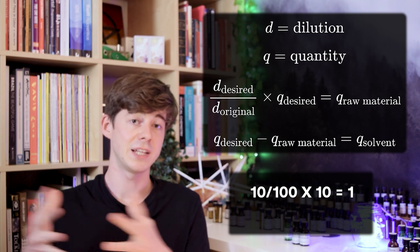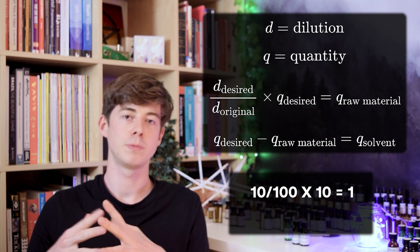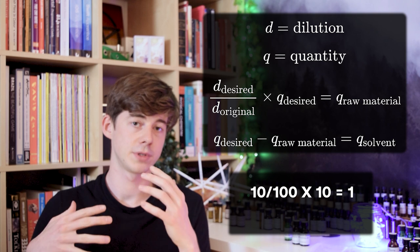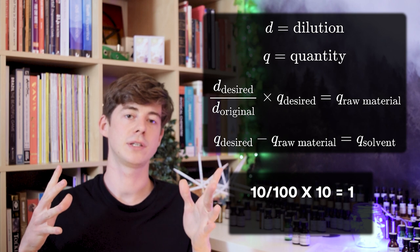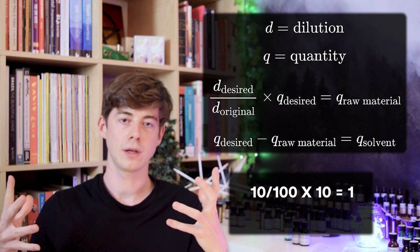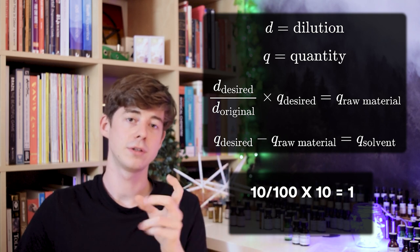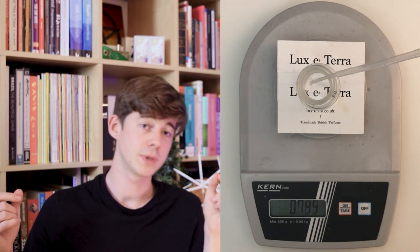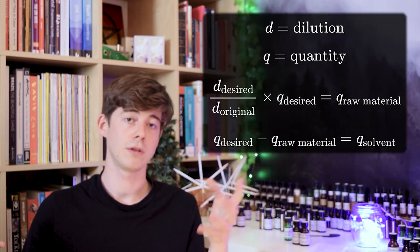Let's say we want to make 10 grams of our new pre-dilution — so we've got a bottle and we want 10 grams total at the end. We take that 0.1 we just calculated and multiply it by 10, which gives us 1, because 0.1 times 10 is 1. That number — 1 gram in our case — is the amount of your raw material that you need to add to the bottle. So that's the first step: putting in the raw material.